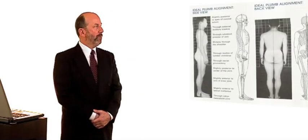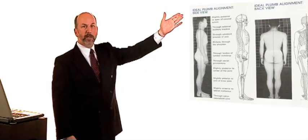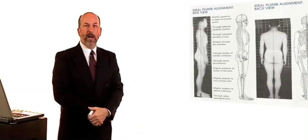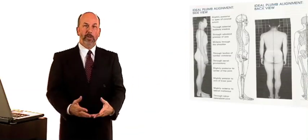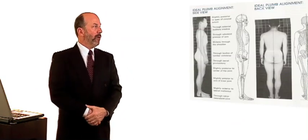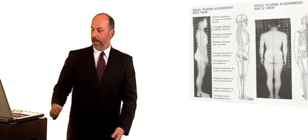Ideal alignment from the side can be demonstrated by a plumb line which traverses through the ear, shoulder, the hip, the knee, and the ankle and divides the body into an anterior and a posterior half that are symmetrical and proportionate. And from the back, the plumb line divides the body symmetrically into a right and left half.